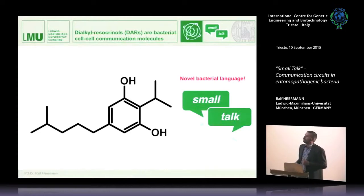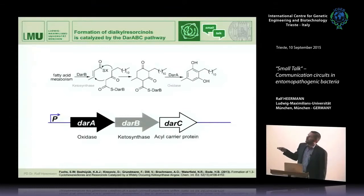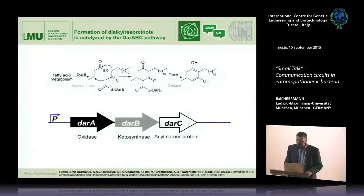This means dialkylresorcinol is another novel bacterial language spoken by Photorhabdus, not yet shown in any other bacteria. As you can see, there is again a ring structure with hydrophobic side chains — the size of the molecule is somewhat similar, because it has to fit into the binding pocket of the LUX-R type receptors — but the chemistry behind is completely different. It was already known from the Bode group how these molecules are synthesized by Photorhabdus — an operon is needed, called DAR, standing for dialkylresorcinol: DAR-A, DAR-B, and DAR-C, which encode an oxidase, a ketosynthase, and an acyl carrier protein. The precursors also come from the fatty acid metabolism, and the molecules are cyclized to finally produce dialkylresorcinols with different side chain lengths.